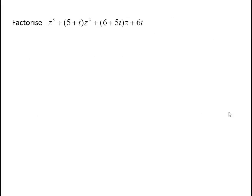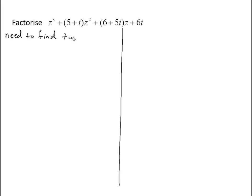Let's have a look at example two. We can do the same thing here with a cubic. We need to find two factors — we know there are going to be three factors in total. I'm looking at factors of 6i.